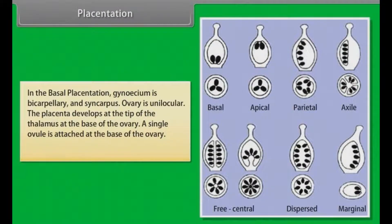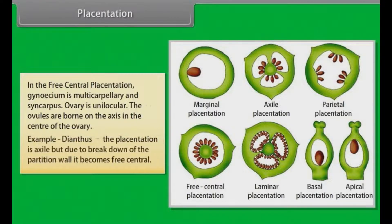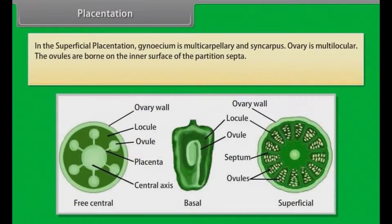In basal placentation, gynoecium is bicarpellary and syncarpous. Ovary is unilocular. The placenta develops at the tip of the thalamus at the base of the ovary, and a single ovule is attached at the base; example, Tegitis. In free central placentation, gynoecium is multicarpellary and syncarpous. Ovary is unilocular. The ovules are borne on the axis in the center of the ovary; example, Dianthus. The placentation is axile but due to breakdown of the partition wall it becomes free central. In superficial placentation, gynoecium is multicarpellary and syncarpous, ovary is multilocular, and ovules are borne on the inner surface of the partition septa; example, Nymphaea.